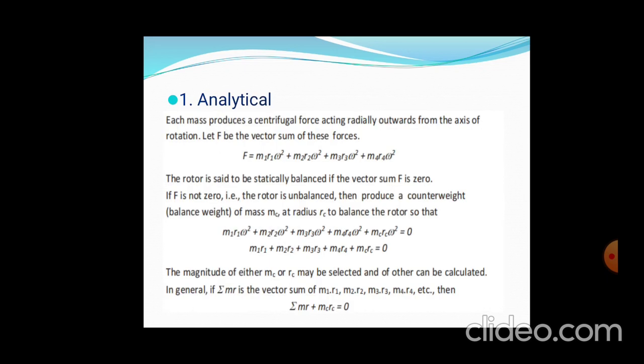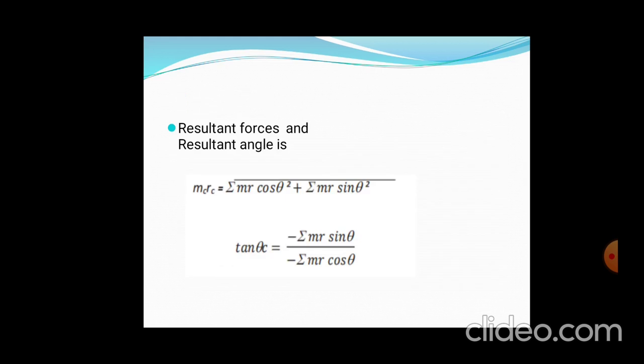The analytical method: the sum of all forces acting on the system equals zero, either in vertical or horizontal directions. To balance the system, whatever unbalanced force exists is balanced by an equal magnitude force in the opposite direction. After solving, we get the summation of M·r·sin θ and summation of M·r·cos θ, where negative values cancel out.